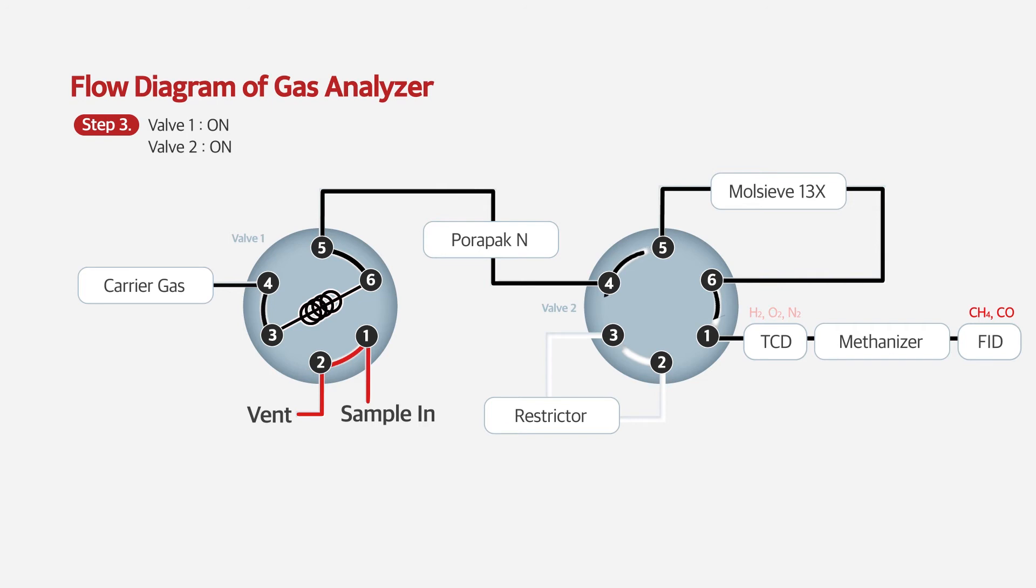After valve two is on, heavy gases such as carbon dioxide to propane are separated in Porapak N column and detected by FID. Among these gases, carbon dioxide is converted to methane in the methanizer and then detected.